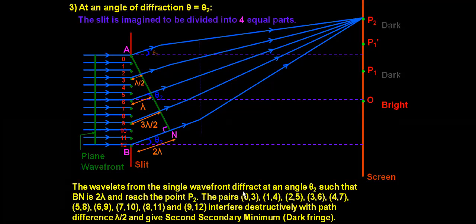The wavelets from the secondary wavefront diffract at angle theta such that BN equals 2 lambda and reach point P2. The pairs in the upper half (0,3), (1,4), (2,5) and in the lower half (3,6), (4,7), (5,8), (6,9), (7,10), (8,11), (9,12) interfere destructively with path difference lambda by 2 and give the second secondary minimum, which is a dark fringe.